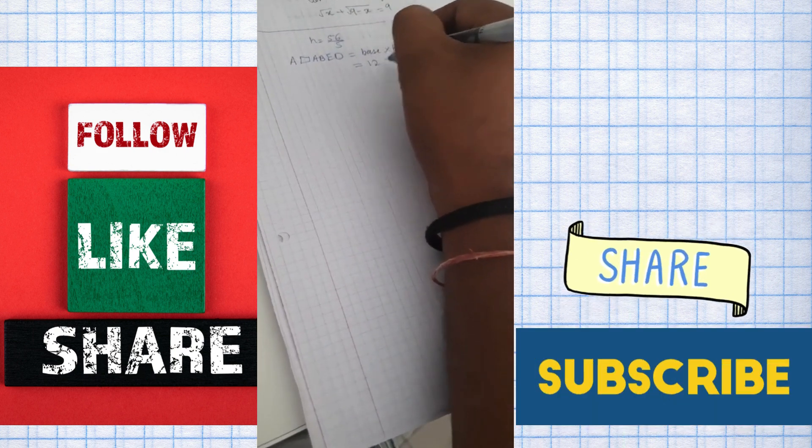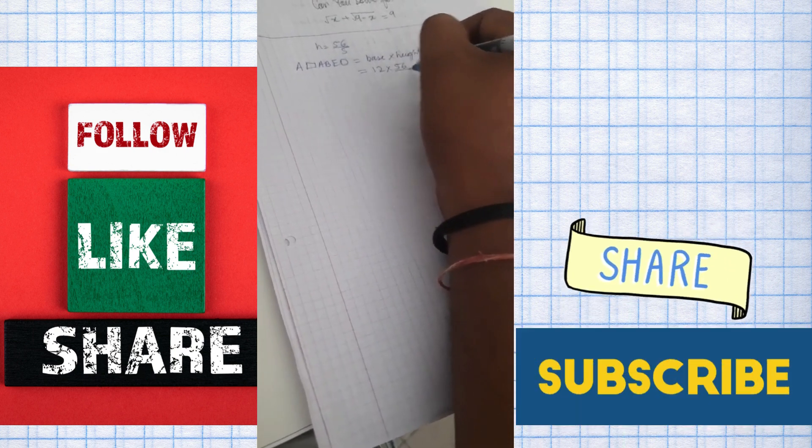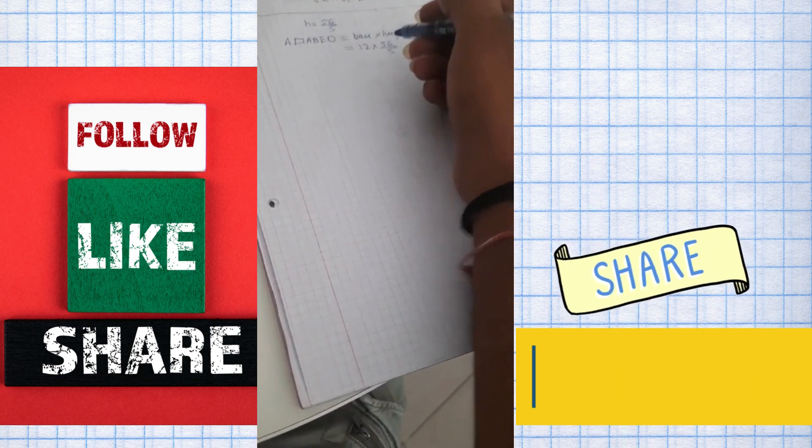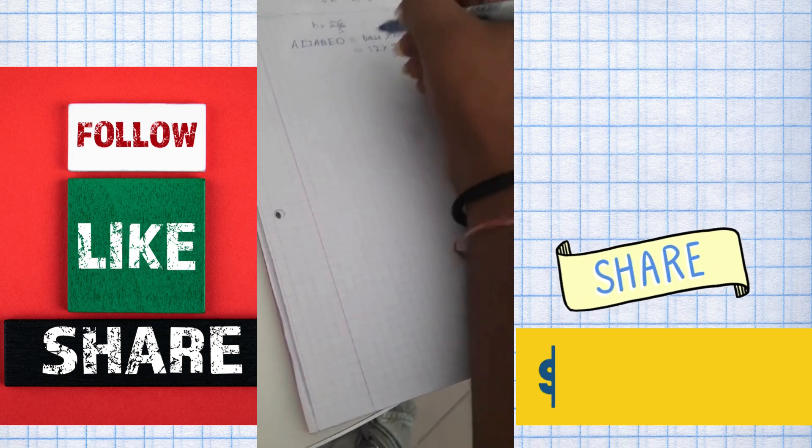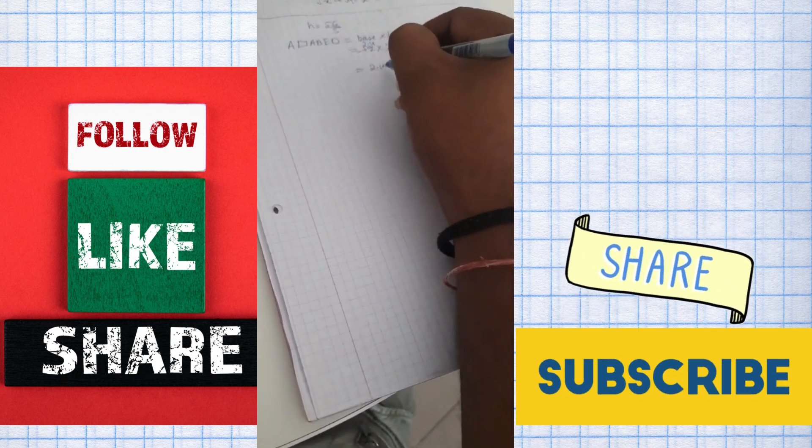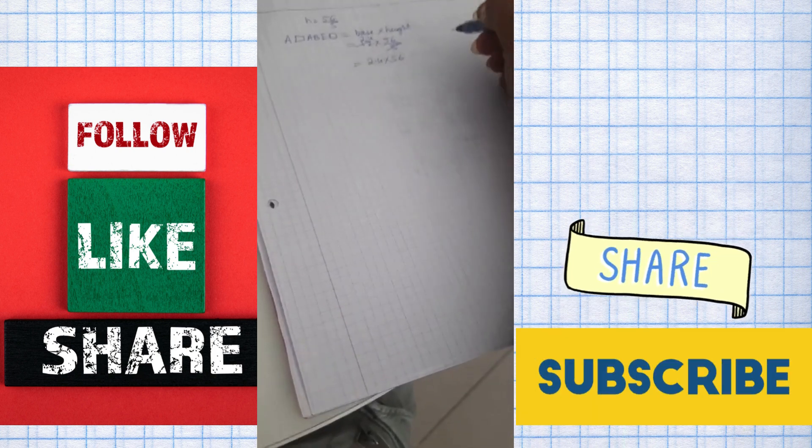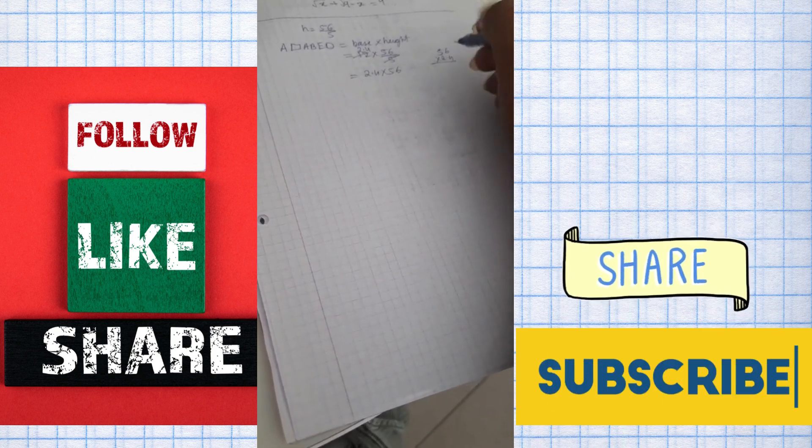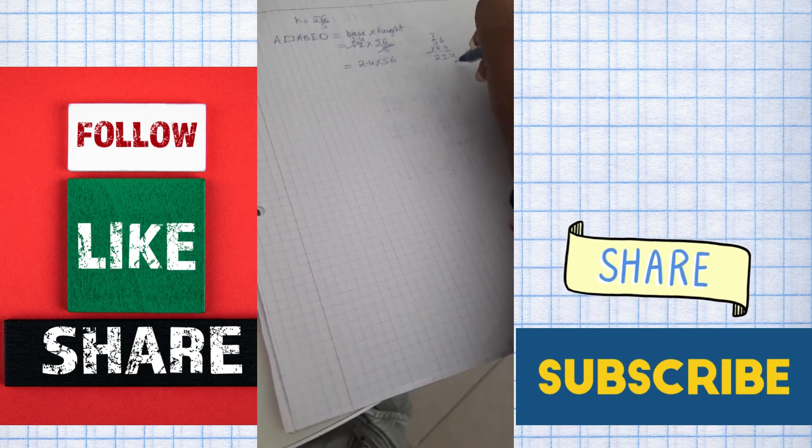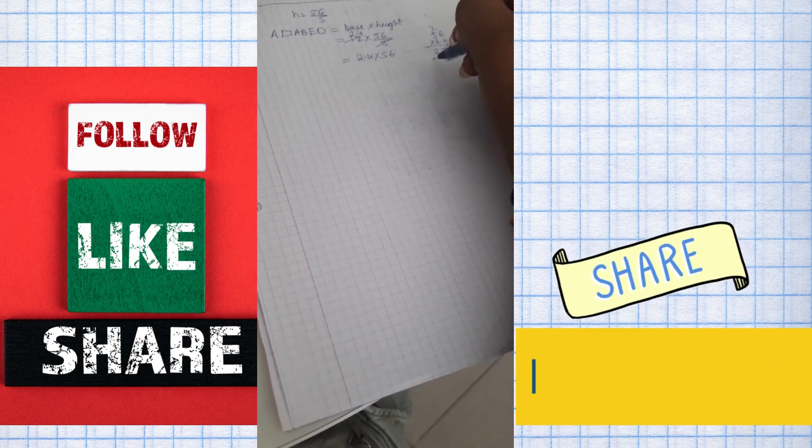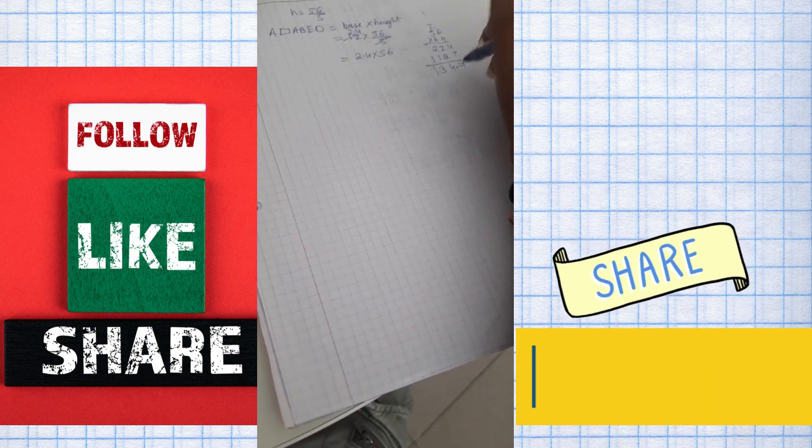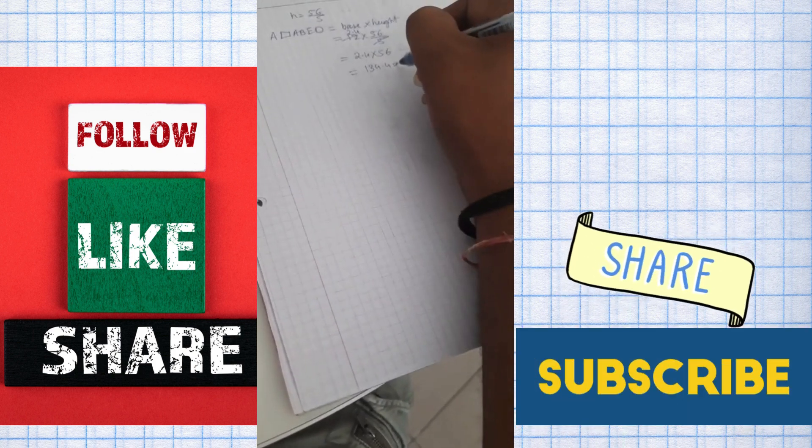So for that, height is equal to base. So we have 12 into 56 upon 5. We can keep it as it is, no problem, or we can just cancel it. So we have 2.4 and we'll write 2.4 into 56. So you can multiply it easily. So this is 134.4 square units.